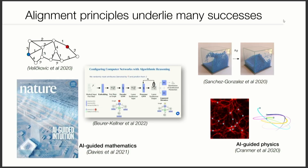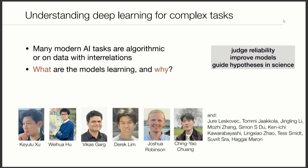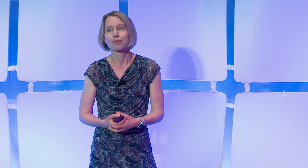The principles I've briefly discussed — global alignment to the task and thinking about local operations — underlie many practical successes across deep learning. Going forward, many modern AI tasks are algorithmic in nature or rely on interrelations in data. The question of what models are actually learning in such cases, and why, will help us understand when we can rely on these models, steer them in the right direction, and use them to the greatest benefit. Thank you.